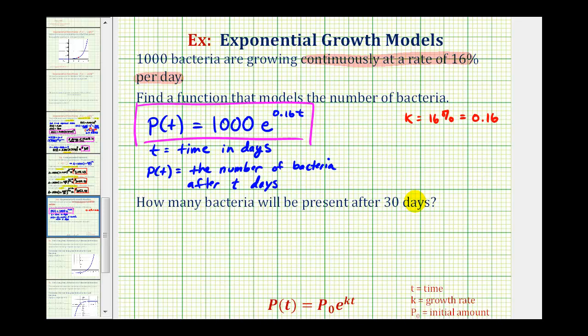So for the second question, to determine how many bacteria will be present after 30 days, we need to find p of 30, which will be 1,000 times e raised to the power of 0.16 times 30.